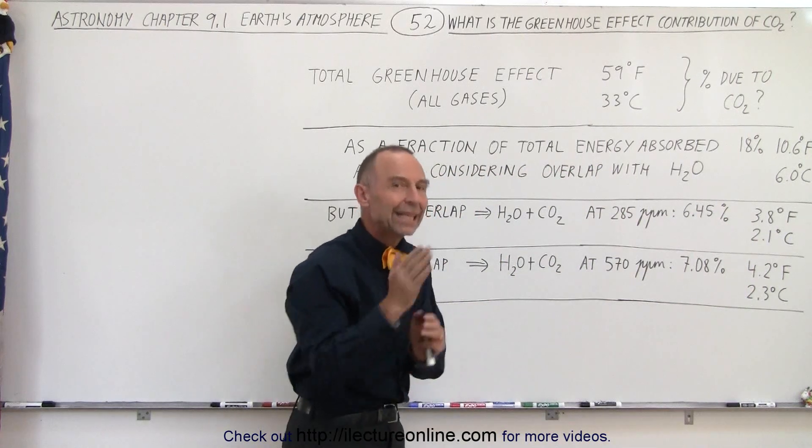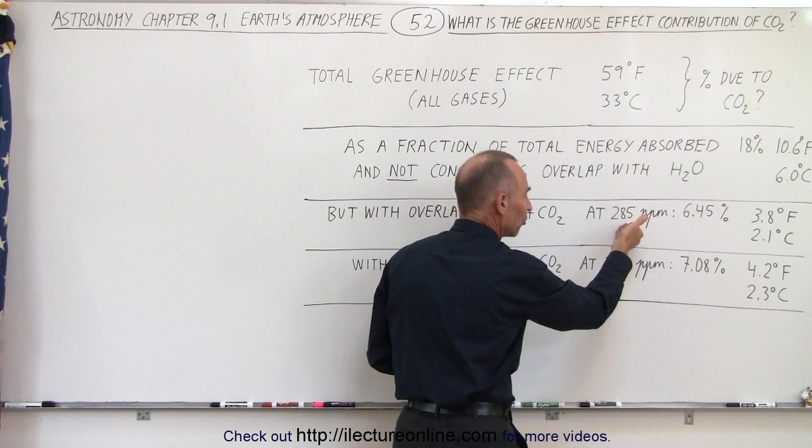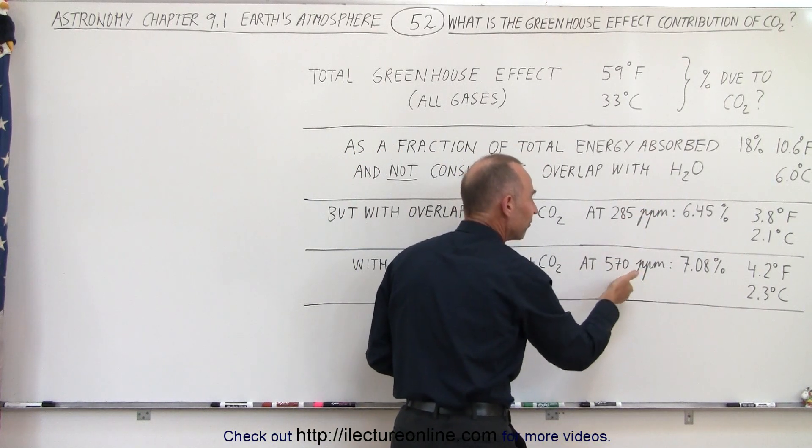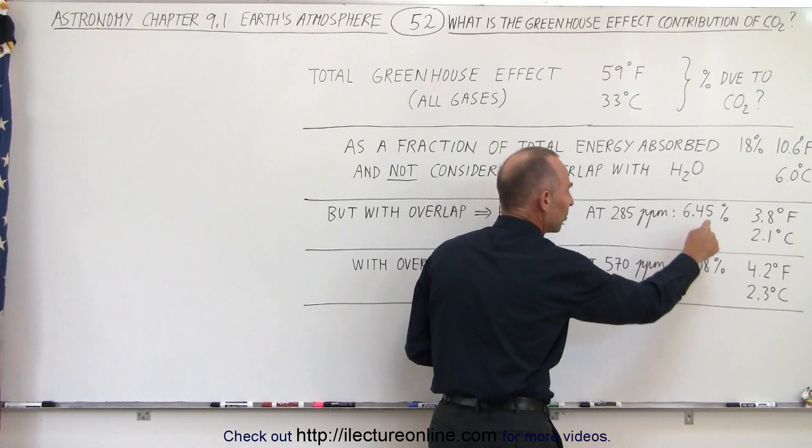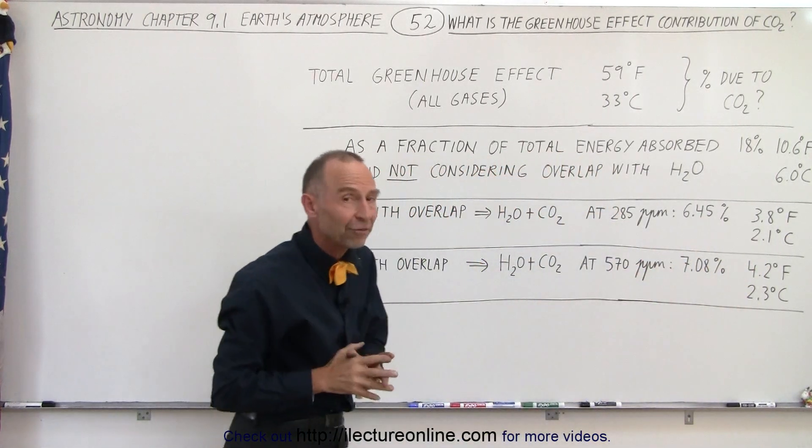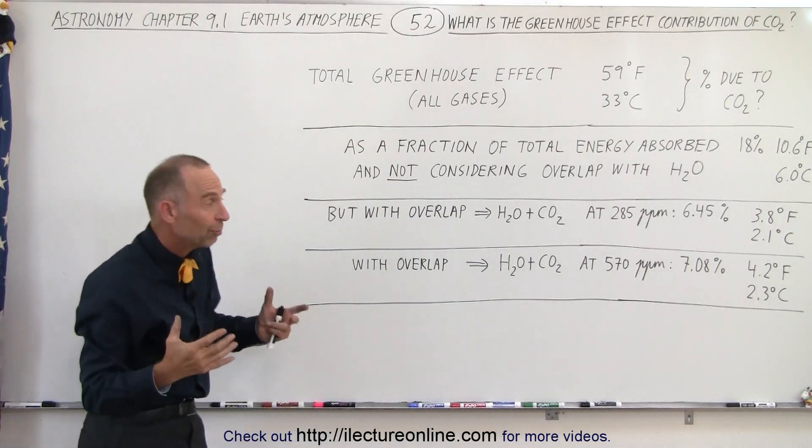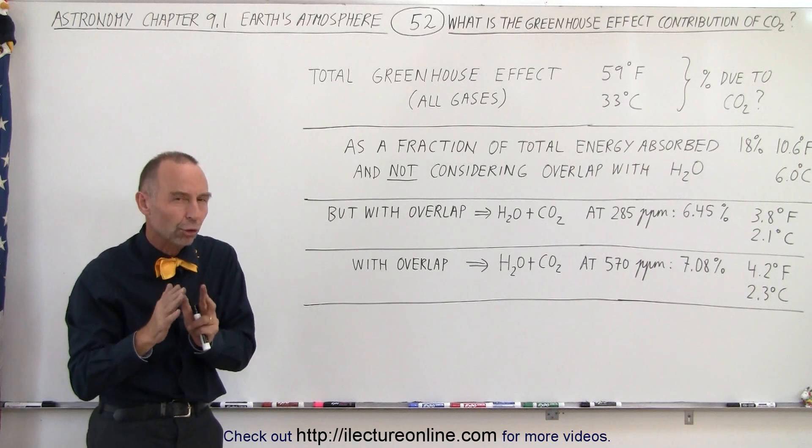So this is the presumed contribution based upon studies and analysis of what carbon dioxide absorbs in addition to what the water vapor already absorbs. And then if the concentrations were then to double from 285 to 570 parts per million, that would then increase from about six and a half percent to about 7.1 percent for an increase of almost a half degree Fahrenheit. And so that is based upon pure analysis of what carbon dioxide is able to absorb.